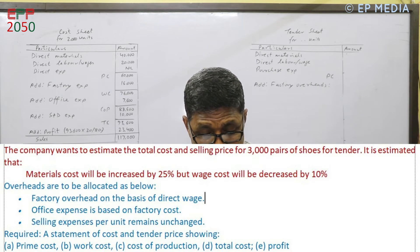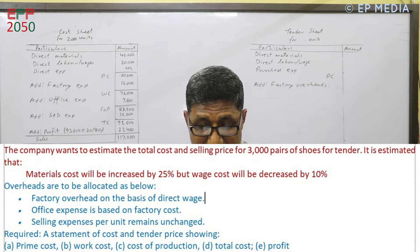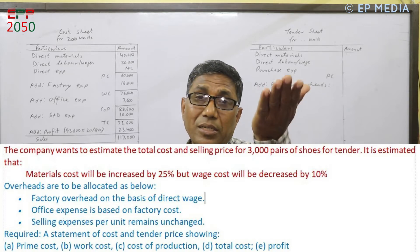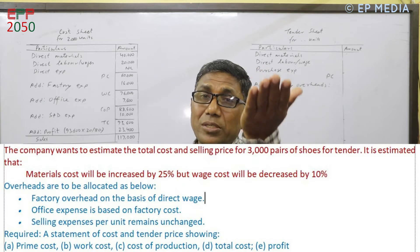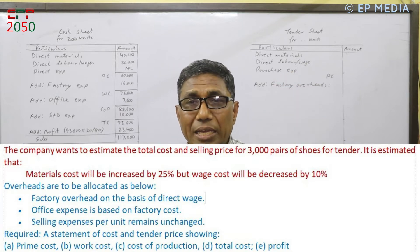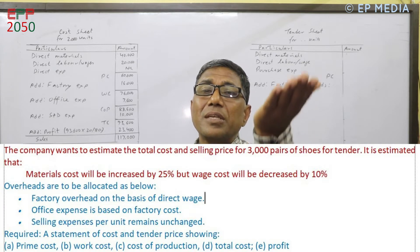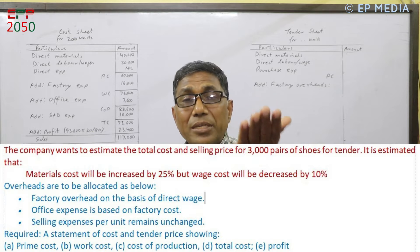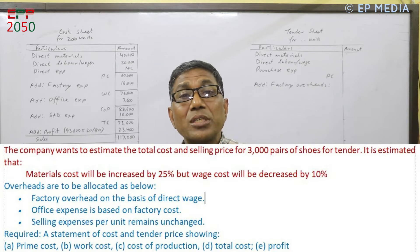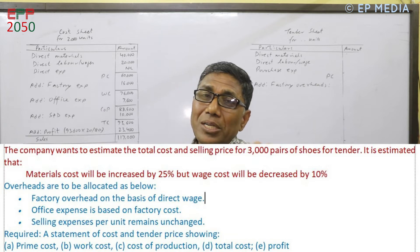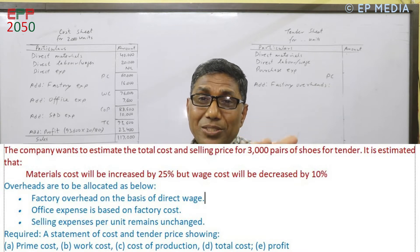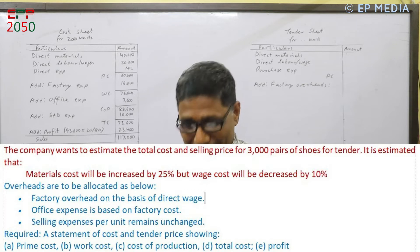The company wants to estimate the total cost and selling price for 3,000 pairs of shoes for tender. It is estimated that material cost will be increased by 25%, but wage cost will be decreased by 10%. The price for tender in the market — the cost of tender may be more or less than some amount. This question is important to learn how to work through it. So there is no need for tension in this question.